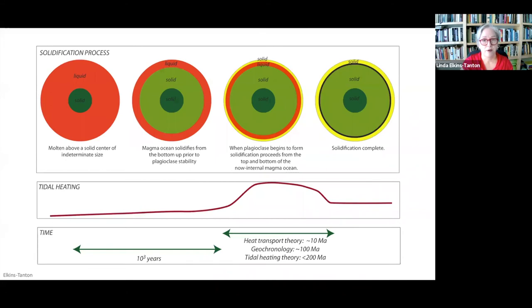So in summary, here's what happened on the moon. First, on the top left: molten above a solid center or possibly no solid center. Solidification occurs from the bottom up, and then at about 80 percent, plagioclase - that is anorthite - begins to form and it floats to the top of a now-internal magma ocean. Then finally solidification is complete.